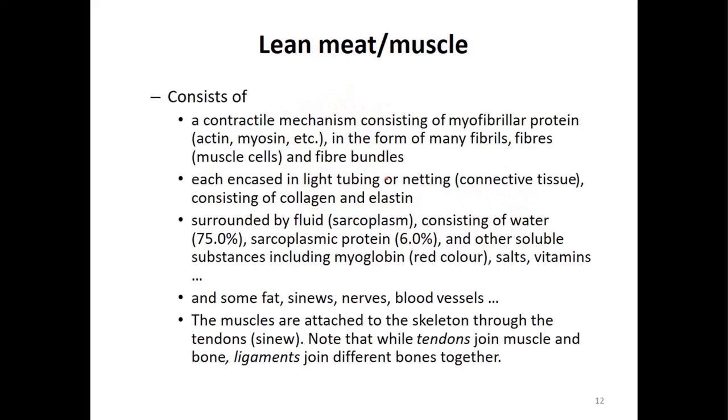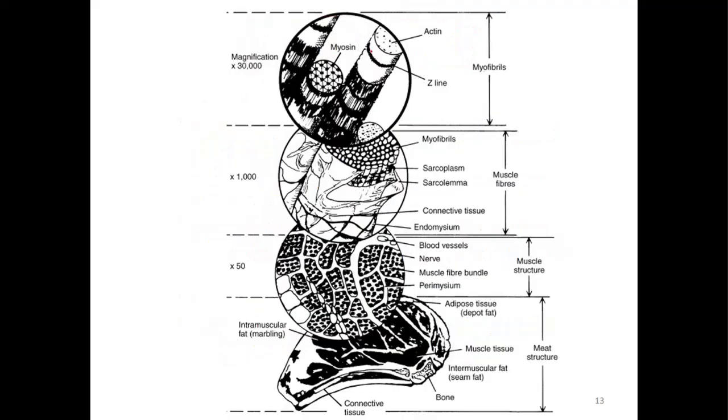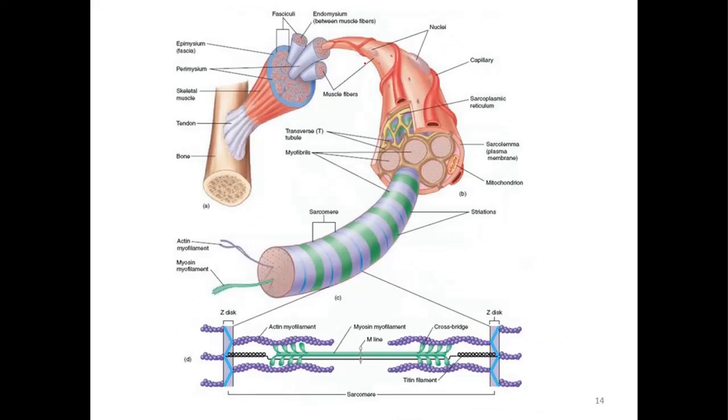Now we go first to lean meat or muscle. In an animal we call them muscle, but after slaughtering the muscle is converted to meat. We go to the figure so we can see clearly - this is a bone and this is a muscle. A muscle is connected to bone through tendon.